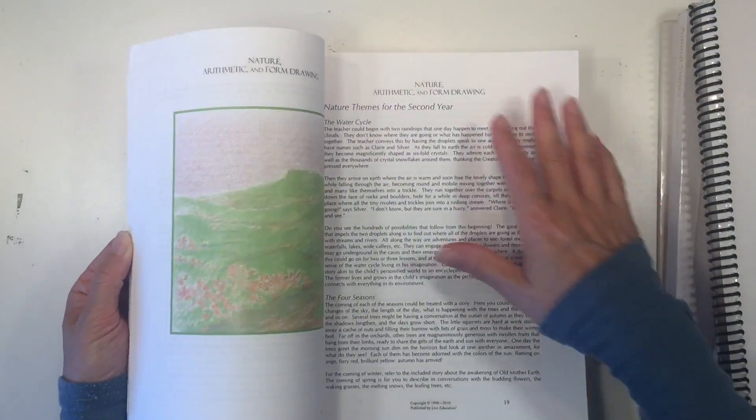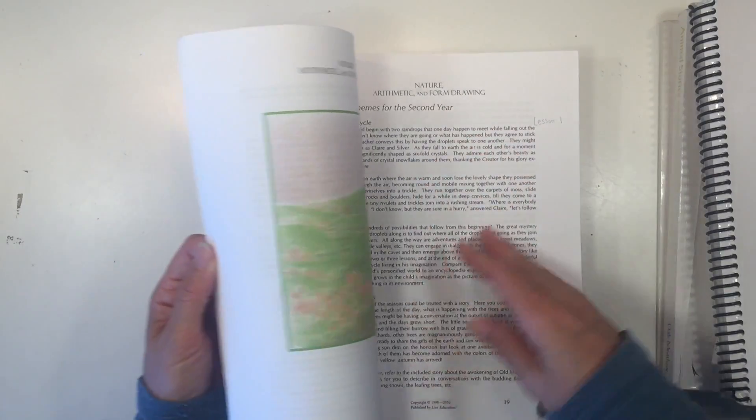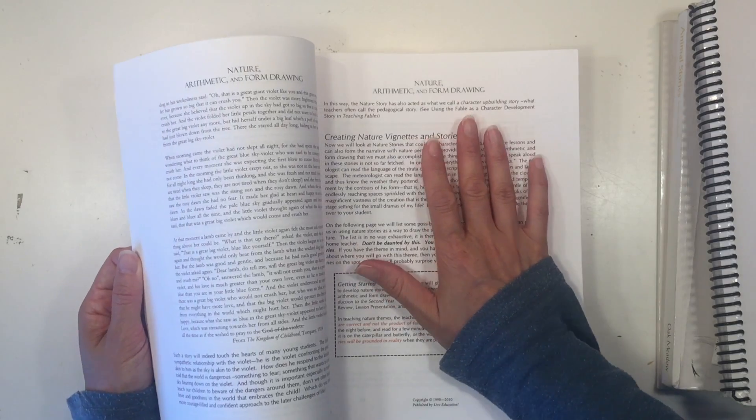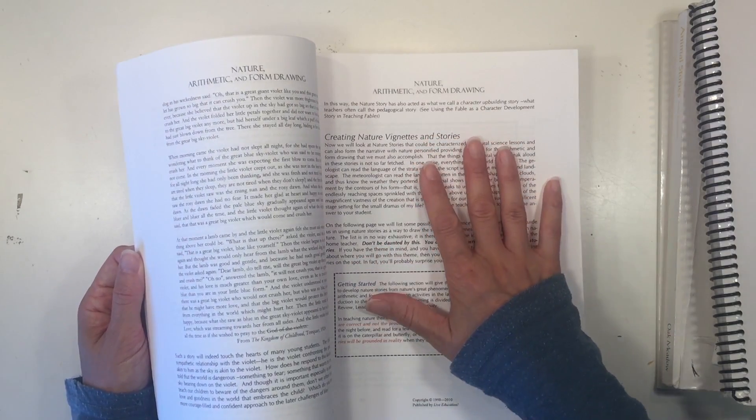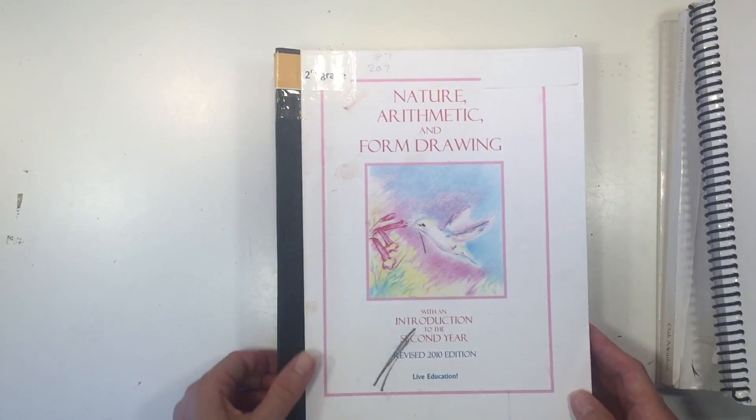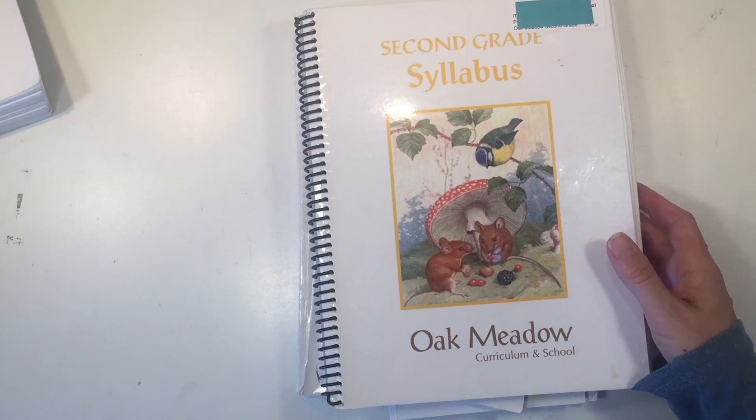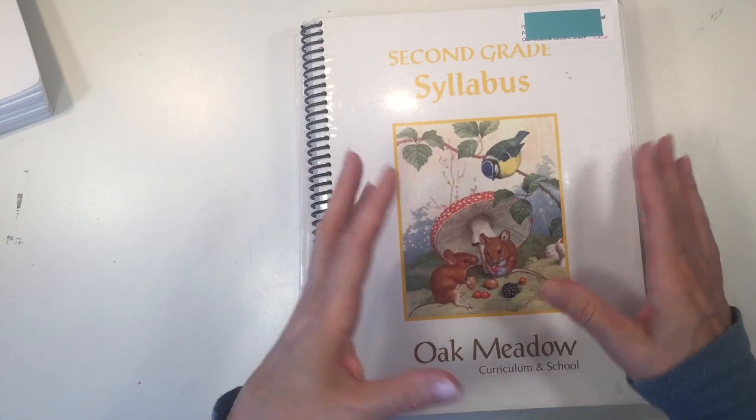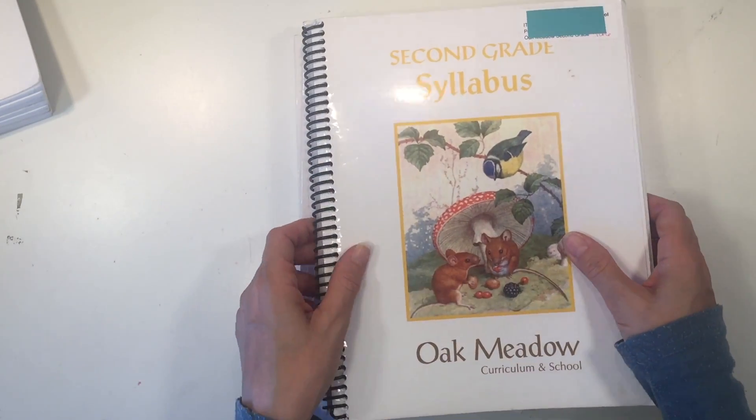Also, the font is pretty small for this curriculum. This is intended as a teacher resource book, not a workbook, and not something that the student is going to work through. So it is quite dense. Let me show you what comes with the Oak Meadow second grade curriculum. I have to say that I am missing one book that I cannot find. And I'm not sure which one it is.